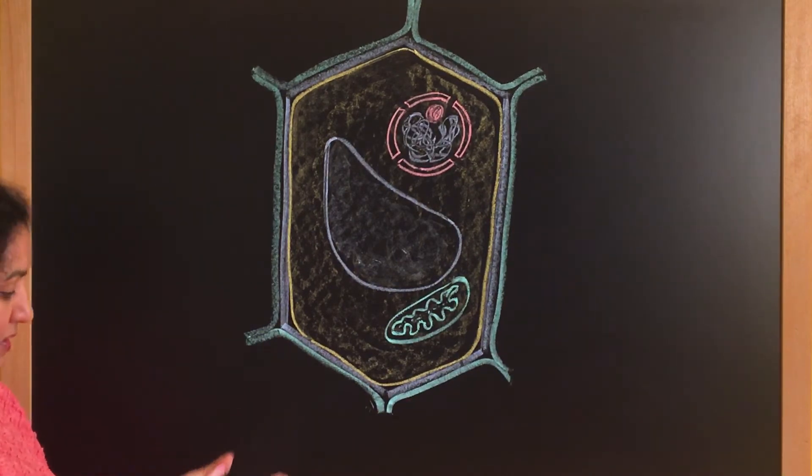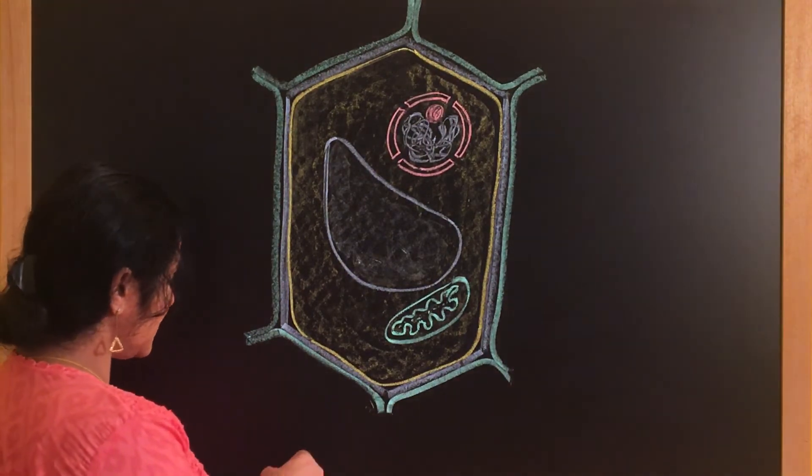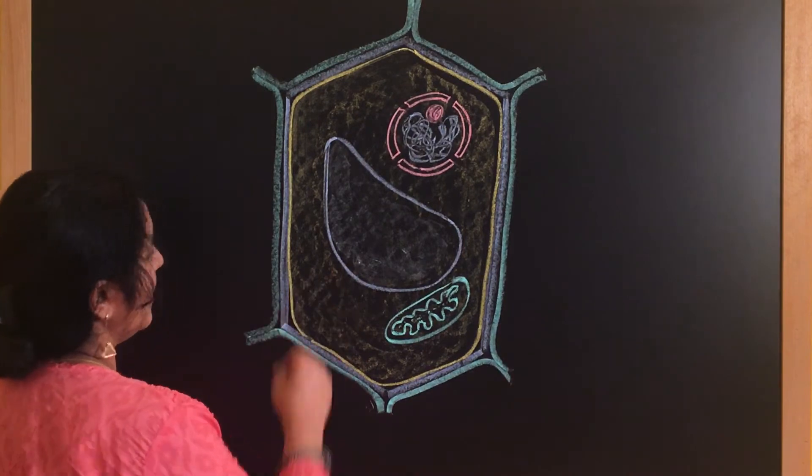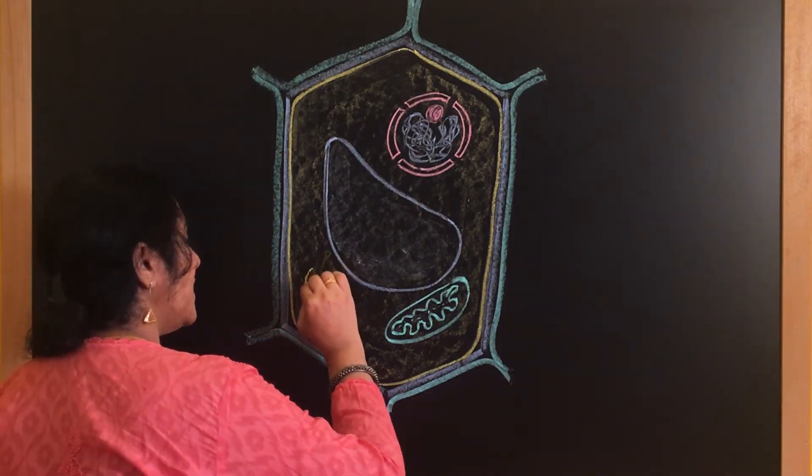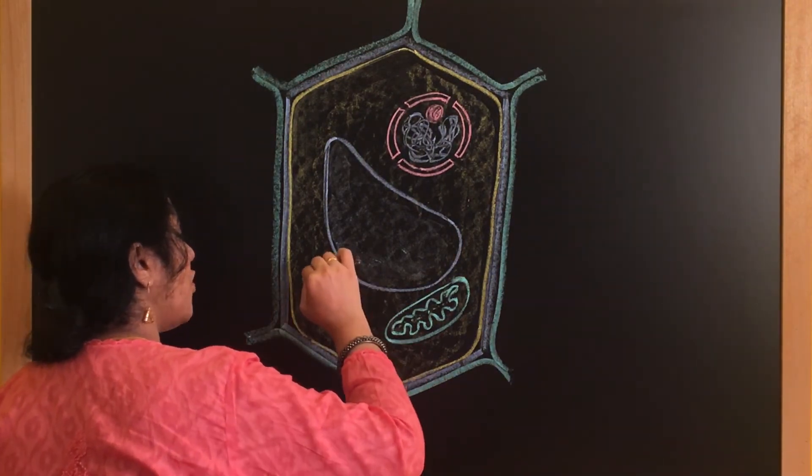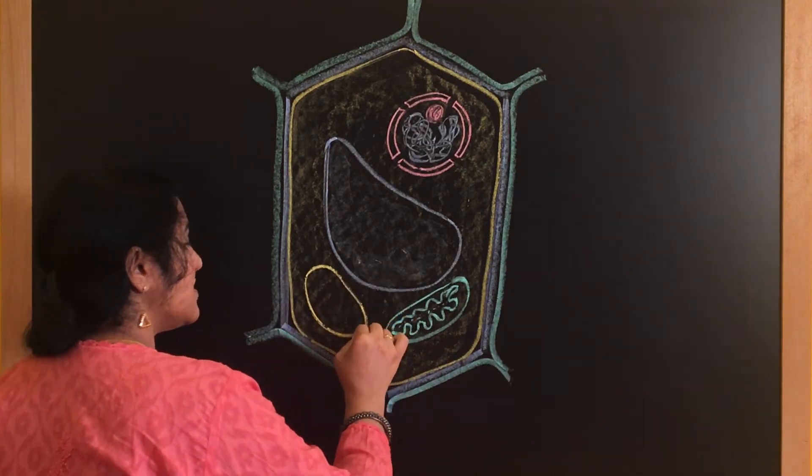Now what is another important organelle which is found inside the plant cell? Chloroplast. So chloroplast is another important thing which is present inside the plant cell. So let us draw chloroplast. Chloroplast is also almost oval in shape. So this is a chloroplast.